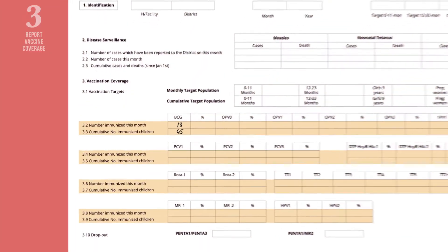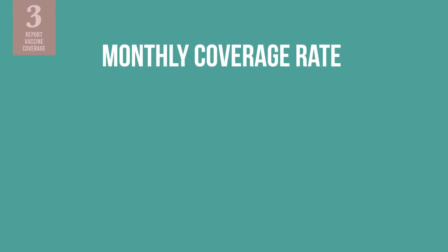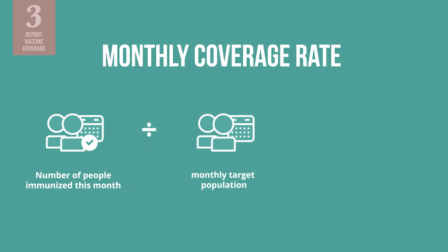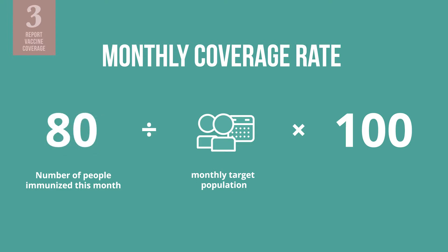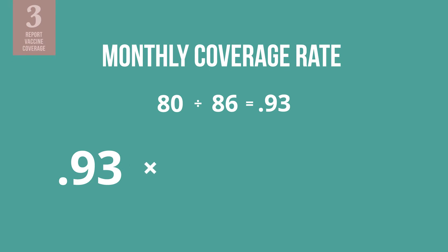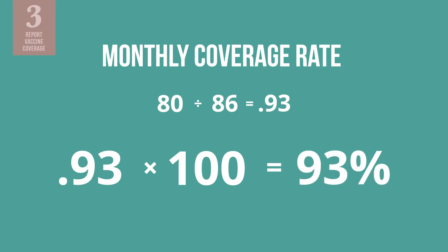Beside each of these numbers, calculate the coverage rate. To find the monthly coverage rate for any dose of any vaccine, take the number of people immunized this month and divide it by the monthly target population. For example, let us say 80 children received the BCG vaccine this month. Divide 80 by 86, then multiply the answer by 100. Your monthly coverage rate for BCG is 93%. The same can be done for pentavalent 1 for infants or TT2 plus for pregnant women.